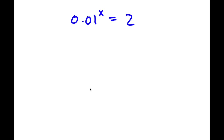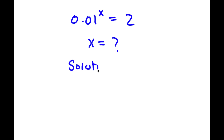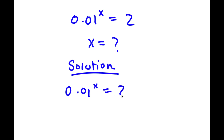So in this problem, I have 0.01 to the power of x is equal to 2. I want to find the value of x here. For my solution, I first start with 0.01 to the power of x is equal to 2.